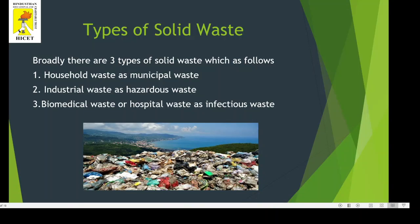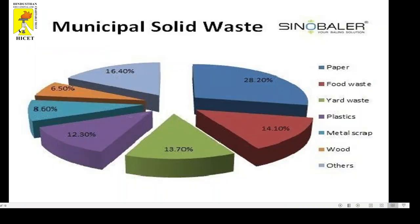Types of Solid Waste: Solid Waste is mainly classified into three types — Household Waste as Municipal Waste, Industrial Waste as Hazardous Waste, and Biomedical Waste or Hospital Waste as Infectious Waste. The graphical representation of Municipal Solid Waste consists of Paper, Food Waste, Yard Waste, Plastic Waste, Metal Scrap, Wood Waste and Other Waste.